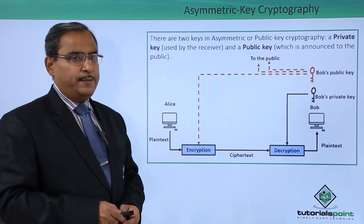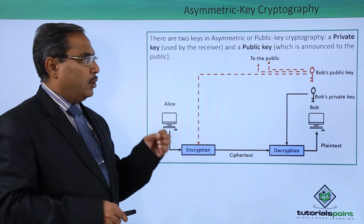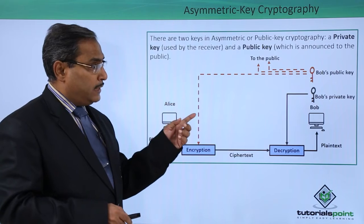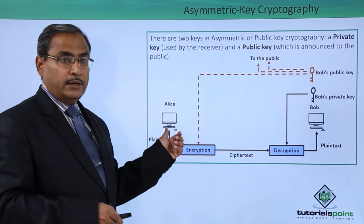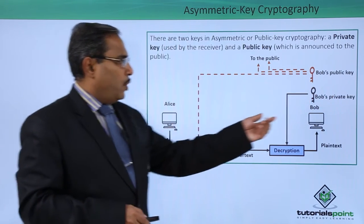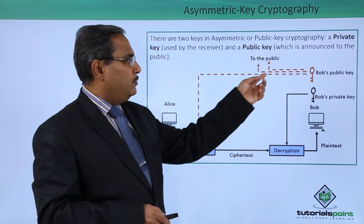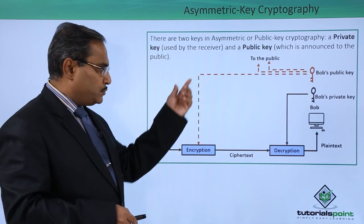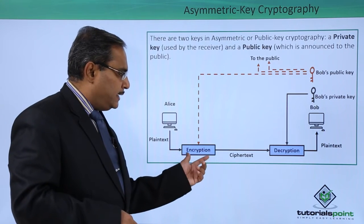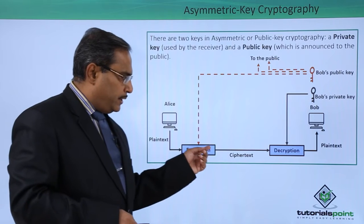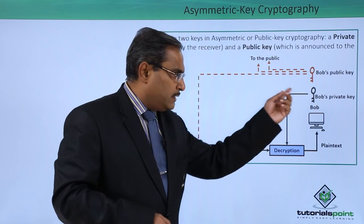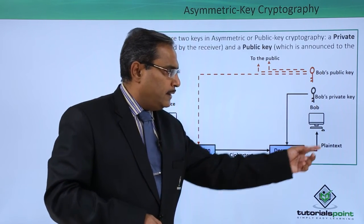In asymmetric key cryptography, there are two keys: one is a private key used by the receiver, and another is a public key which is announced to the public. Bob's public key is available to all and is used for encryption. The plain text sent by Alice is encrypted using Bob's public key, transferred as cipher text, and then at decryption, Bob's private key is used to recover the plain text.